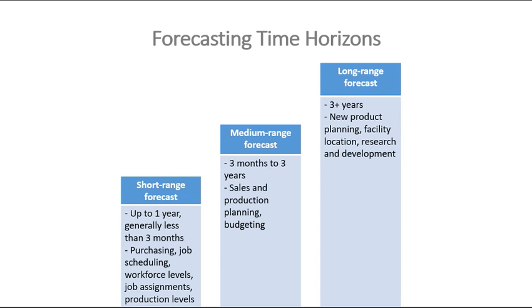The long-range forecast covers five or more years — for example, when a company wants to buy a new facility or relocate, which takes a long time to plan. As a student, your short-range forecast is passing your next test, your medium-range is passing from first to second year, and your long-range is graduating and getting a job.